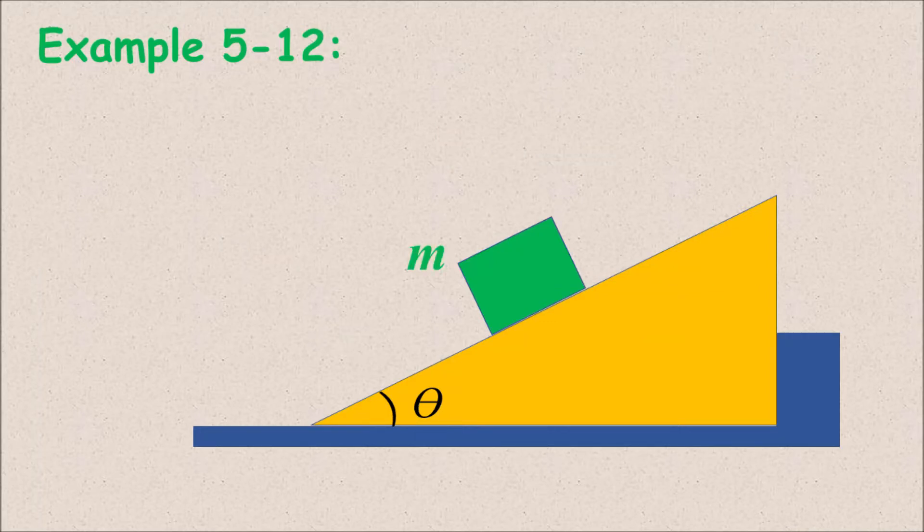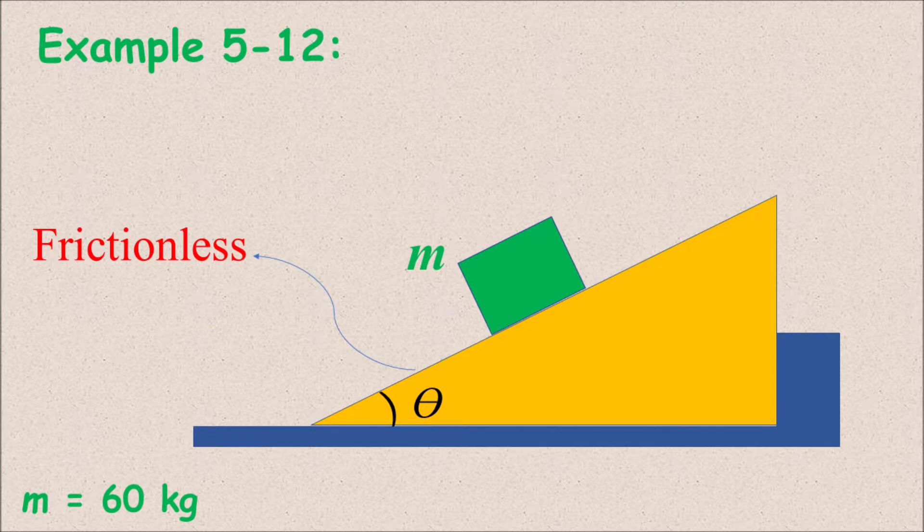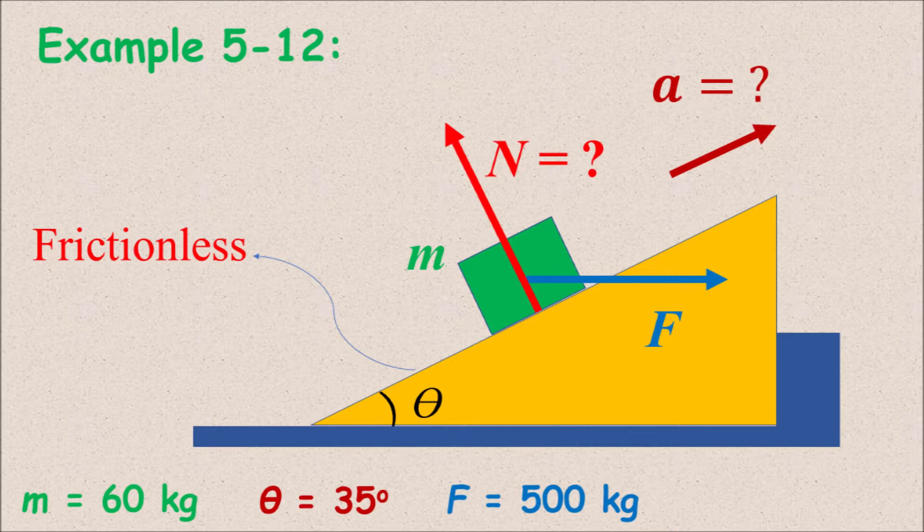Hi, this is another interesting example. Here we have a crate of mass M that is 60 kilograms, pushed up a frictionless ramp of angle theta that's 35 degrees by a constant horizontal force F which is 500 Newtons. We would like to find the acceleration of the crate and the normal force from the ramp on the crate.